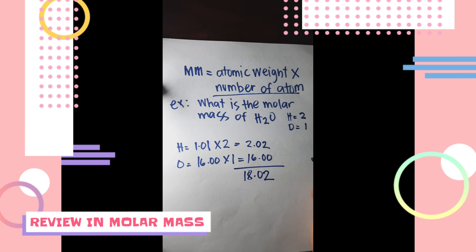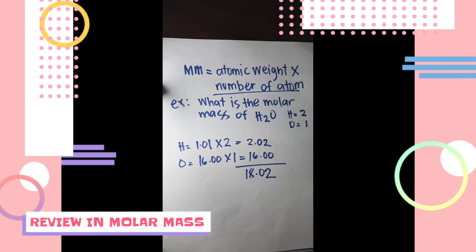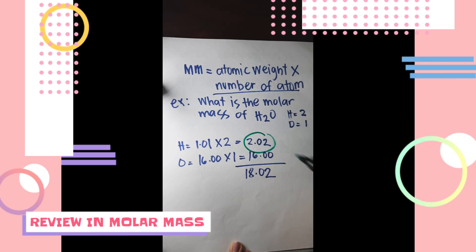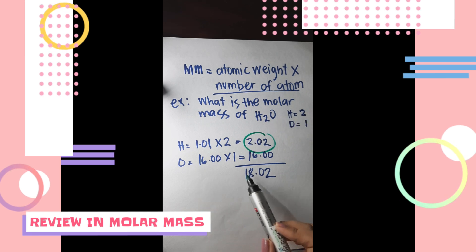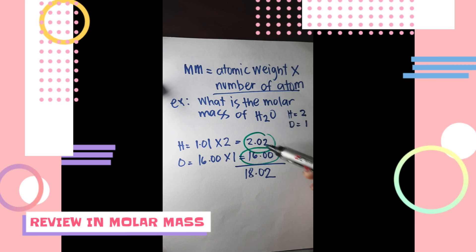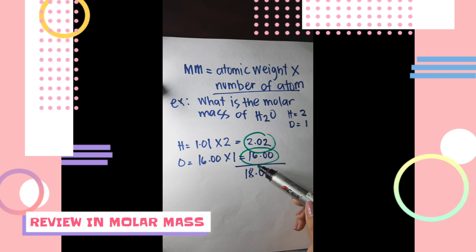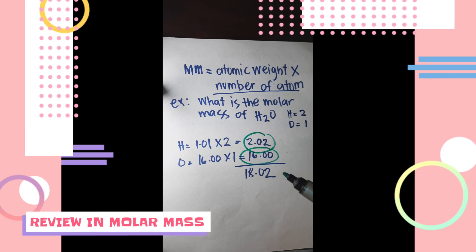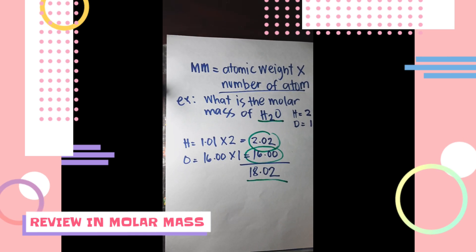So if we are asked to find the molar mass of hydrogen, the answer is 2.02 — that is the mass of 2 hydrogen atoms. If asked the molar mass of oxygen in H₂O with one oxygen, the answer is 16.00. The total molar mass of the compound H₂O is 18.02.